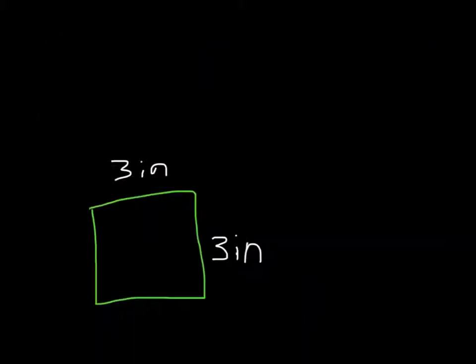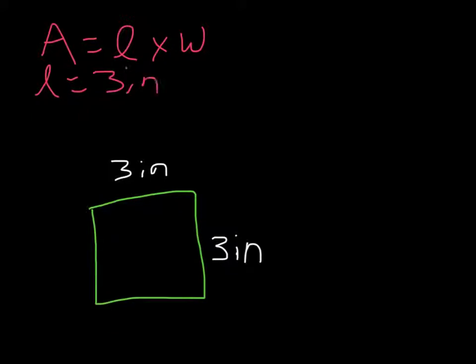Let's try one more. We have a square, which is, remember, a square is also a rectangle. It's also a parallelogram. We use the same formula. Area equals length times width. My length is 3 inches. Remember, length and base are the same thing. They're going to be the same measurement.